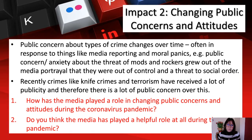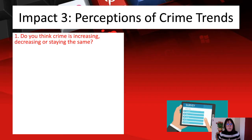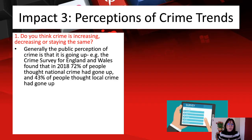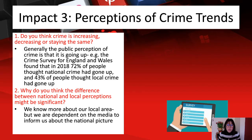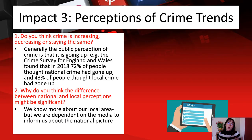Impact three: perceptions of crime trends. Do you think crime is increasing, decreasing, or staying the same? Generally, the public perception is that it's going up. The Crime Survey of England and Wales found that in 2018, 72% of people thought national crime had gone up, and 43% thought local crime had gone up. There's a difference because we depend on the media to tell us what's happening nationally, and if news only ever reports bad things, you will think national crime is rising.